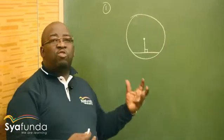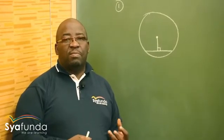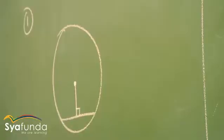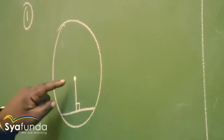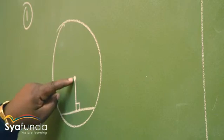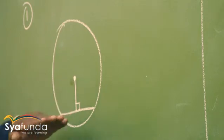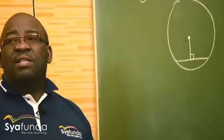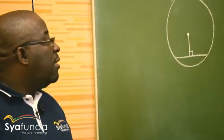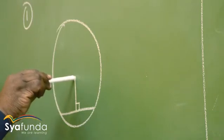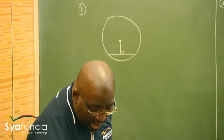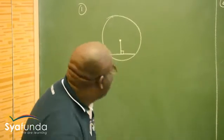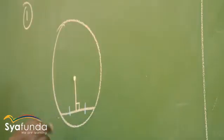It is important that we must be able to say our theorems in words, because that is also examinable. Fortunately, you say what you see. This line here is called a chord. There is a line that is drawn from the center of a circle, drawn perpendicular to a chord - what does it do to the chord? It bisects the chord. So a line drawn from the center of a circle, perpendicular to a chord, will bisect the chord. That is what we need to prove in this theorem.